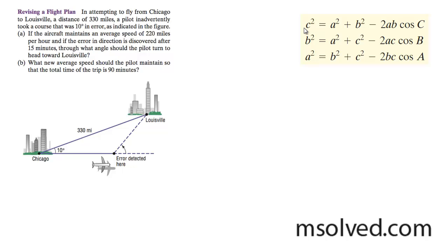We have the following problem. What we first want to do is find out what angle the pilot should change his direction, turning from this path here to head to Louisville from Chicago.